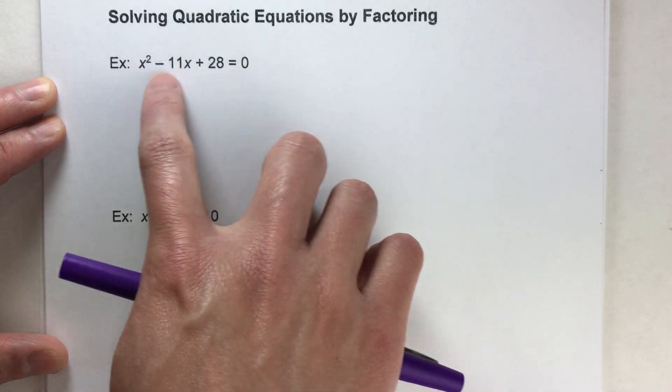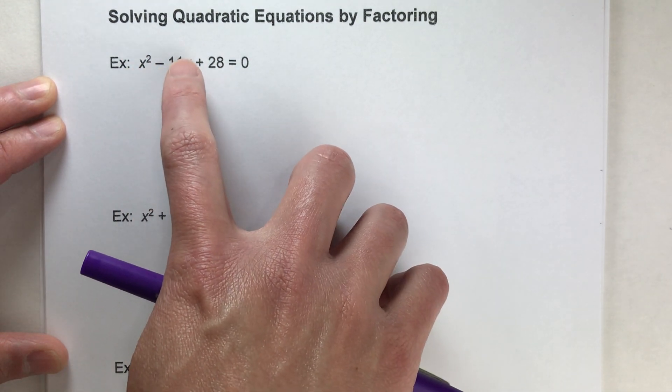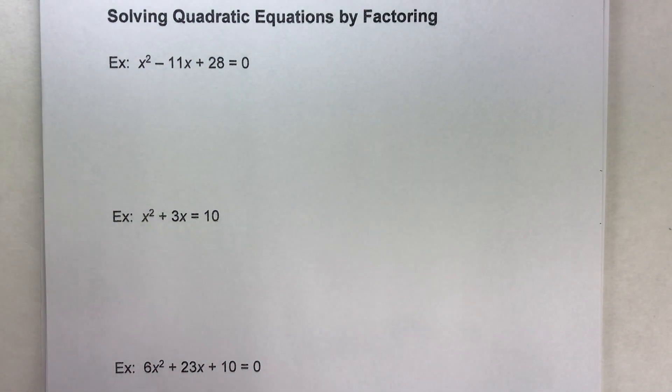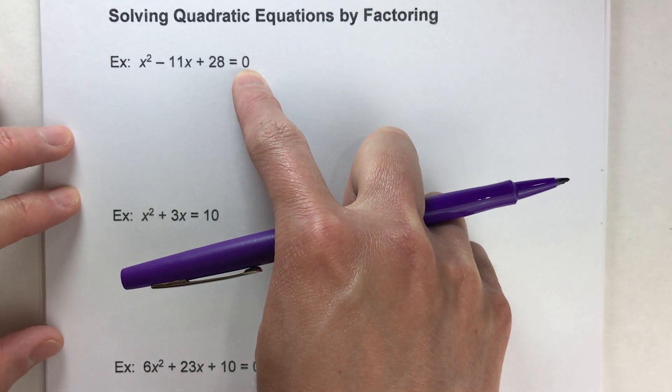But it's a little different with quadratics because we've got an x squared term and an x term there. We actually want to get everything on the same side. And notice it's already done for you here.